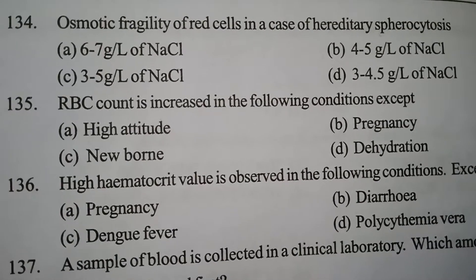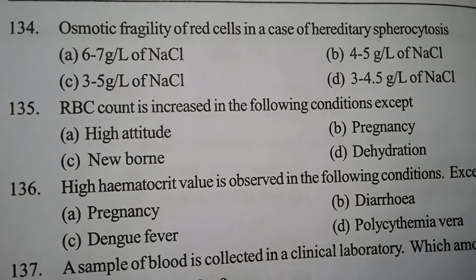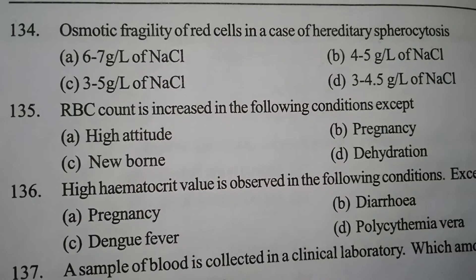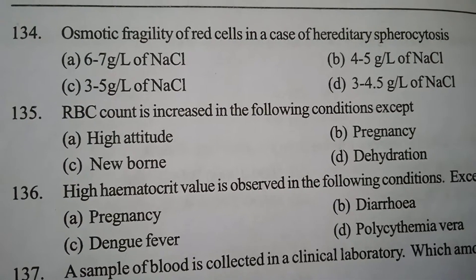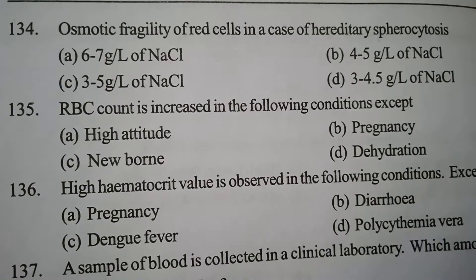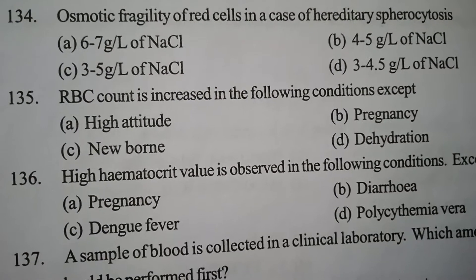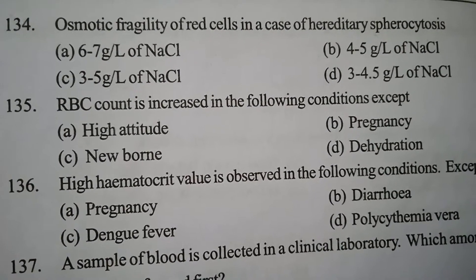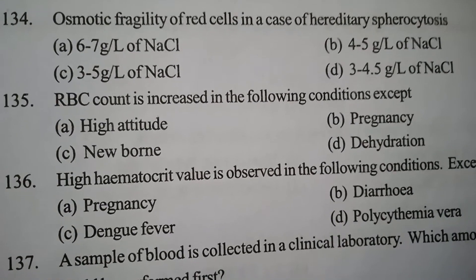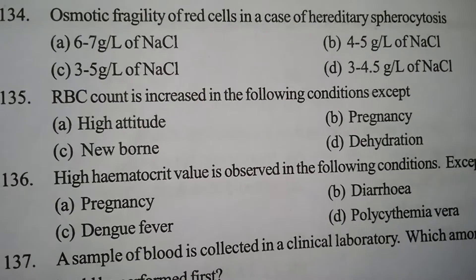Correct answer: Option A — 6-7 gm per litre of sodium chloride.